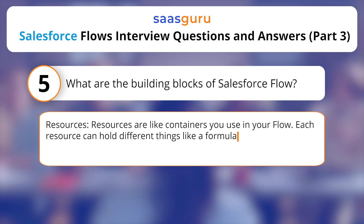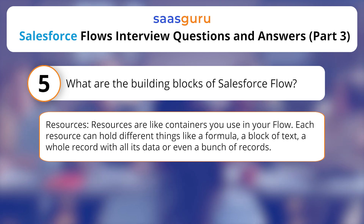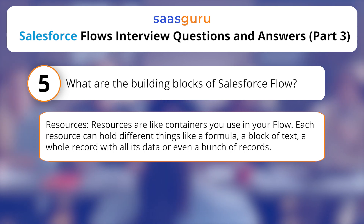Resources are like containers you use in your Flow. Each resource can hold different things like a formula, a block of text, a whole record with all its data, or even a bunch of records.